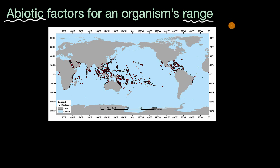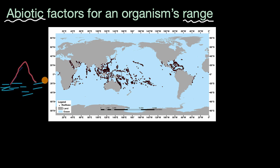Let's think about some of those factors. One of the more obvious ones is whether an organism can live on land or in water. For example, let's say there is an island surrounded by water. If you have some animal that needs to live on land, then its range is definitely going to be limited by the water around it, so it's only going to be able to stay on that island.